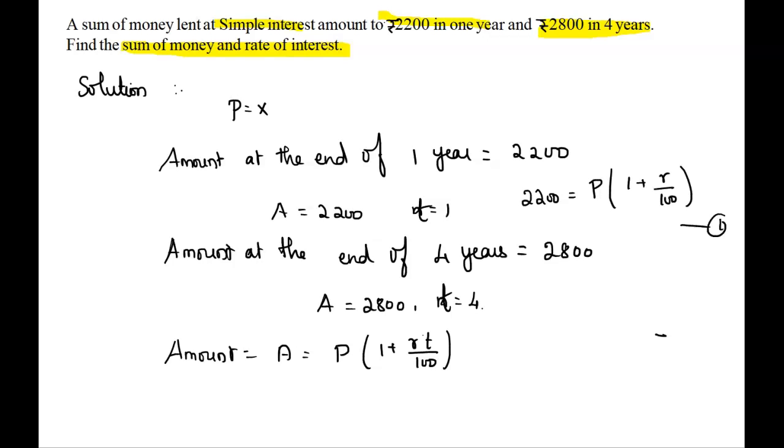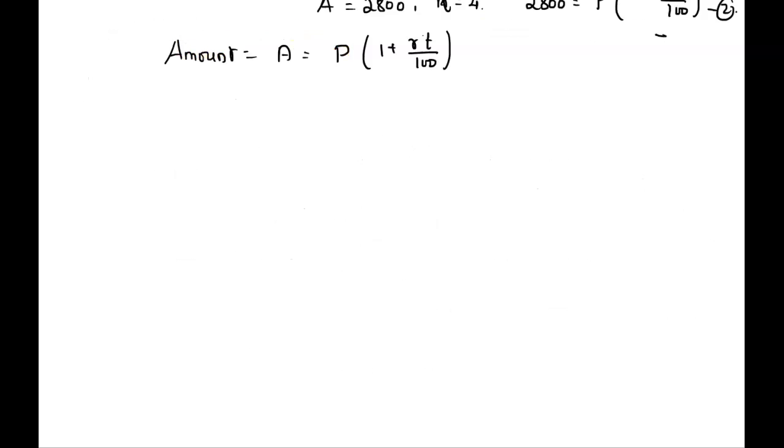From here, we can write equation 2 as 2800 equals P times (1 plus 4R divided by 100).